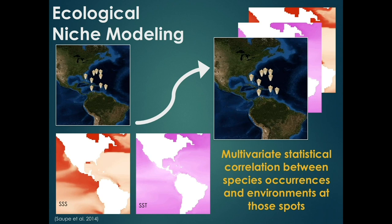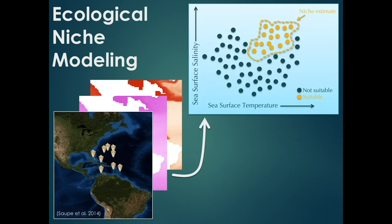How does niche modeling work? We have species occurrence data and correlate those using multivariate statistics with the combinations of environmental conditions that occur at those places, contrasting with environmental conditions where species do not occur. Looking at cone snails correlated with sea surface salinity and temperature: the niche modeling algorithm gives a prediction in environmental space, drawing a circle around the environmental space where species occur, with some extrapolation, yielding an estimate of what might be suitable and what is not suitable.